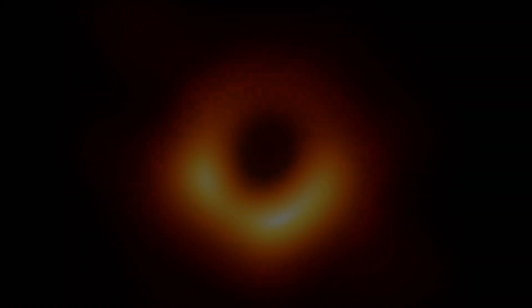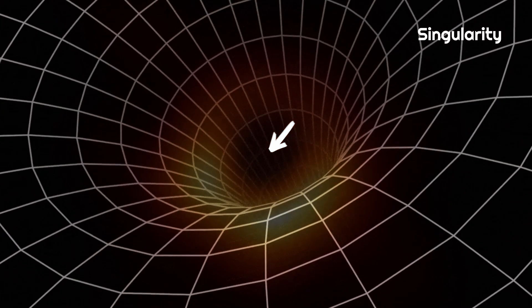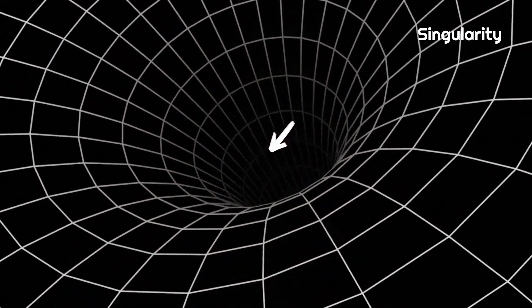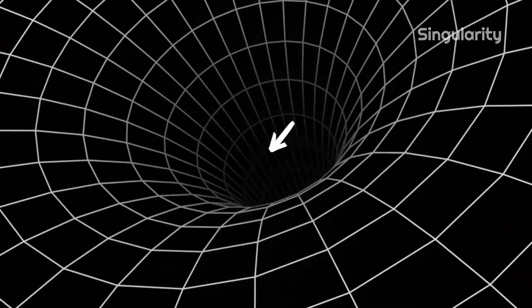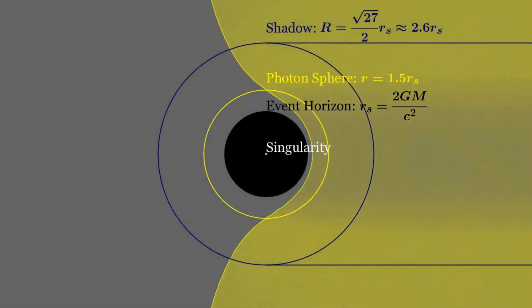At the core of every black hole, there exists a singularity. In the context of a black hole, a singularity refers to a point within the black hole where the mass is concentrated into an infinitely dense and small space. This point is often considered the core of the black hole, where the laws of physics, as we understand them, break down.